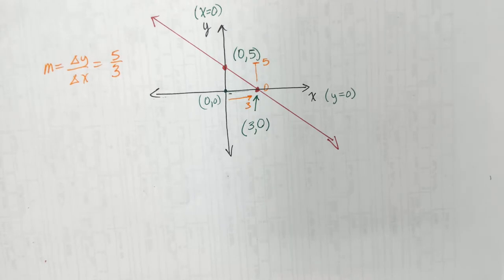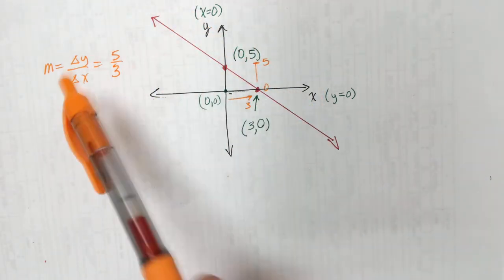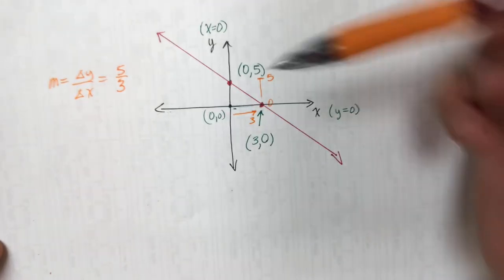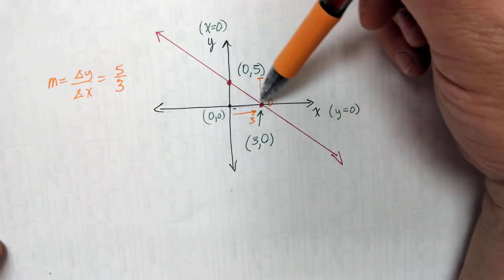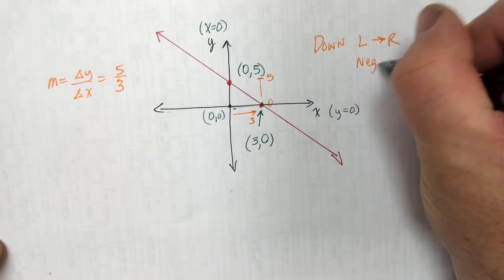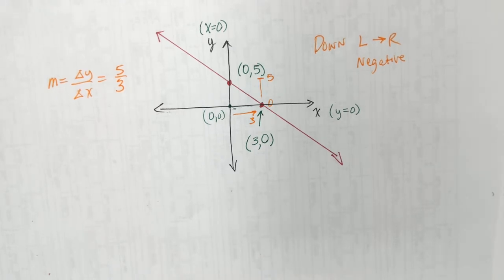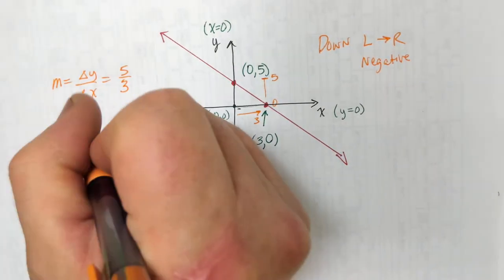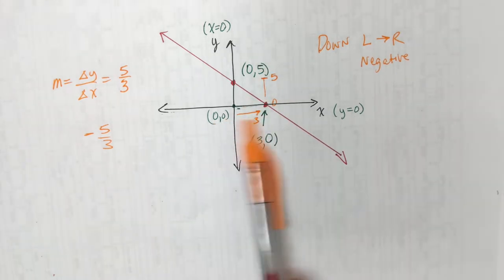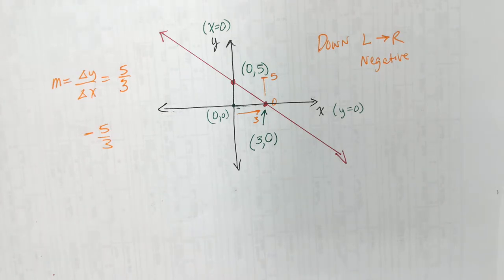We have a little problem — Jackie wanted a negative slope. Remember, you read from left to right. If you're going down from left to right, it's negative. This line goes down from left to right, so it's a negative slope. I just throw the negative in — it's negative five over three. The whole number is negative, not just the top or bottom.